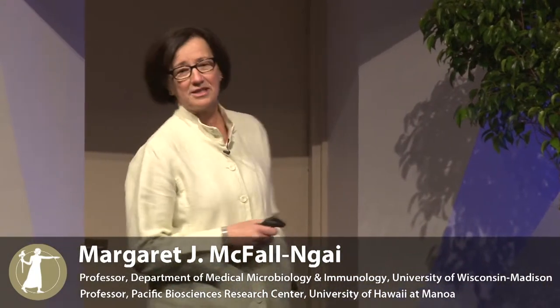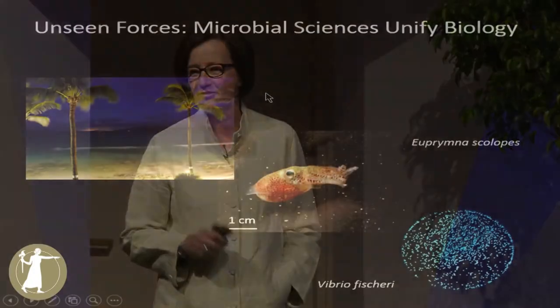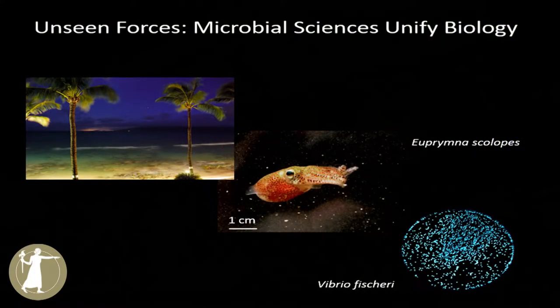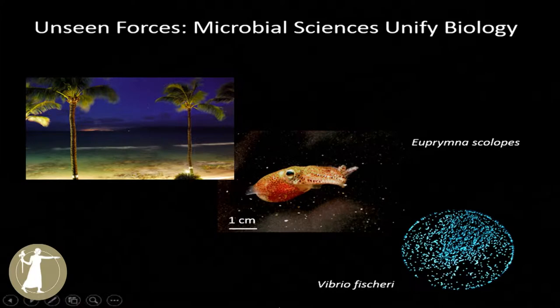What I'm going to do today is I'm going to talk about this, but in the context of a very specific symbiosis that I work on. I study the Hawaiian bobtail squid. This beautiful little animal is a night-active predator in the shallow sand flats of the Hawaiian archipelago, and it maintains a lifelong relationship with a luminous bacterium. I'm going to tell you a couple of stories about this association.